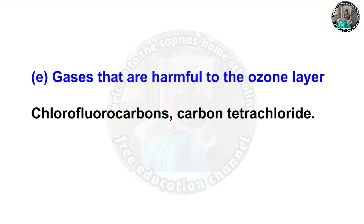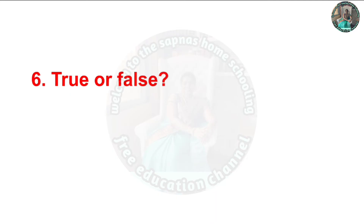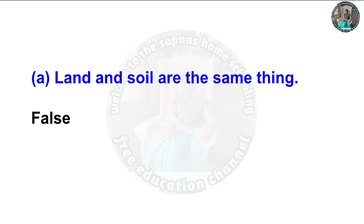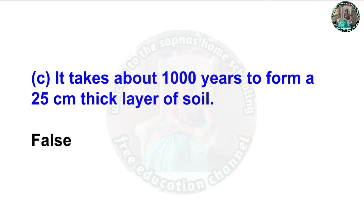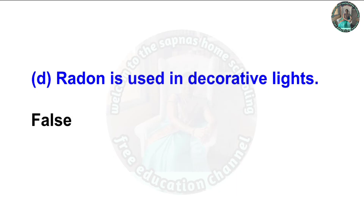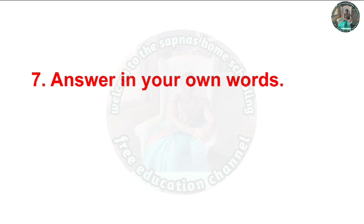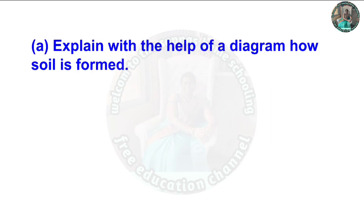True or False: Gases that are harmful to the ozone layer — chlorofluorocarbons and carbon tetrachloride. Land and soil are the same thing — False. Water in the lake is called ground water — False. It takes about 1,000 years to form a 25-centimeter thick layer of soil — the answer is False. Neon is used in decorative lights — the answer is False.